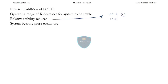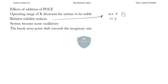When you add the pole, the system will become more oscillatory. More oscillatory means the damping factor is going to reduce. And what about the breakaway points? The breakaway points shift towards the imaginary axis — everything is going bad when you are adding poles.